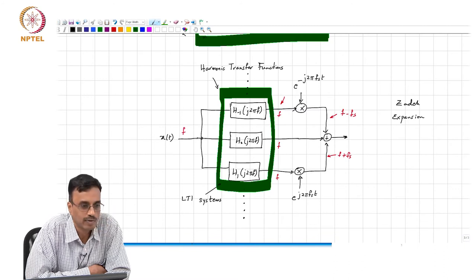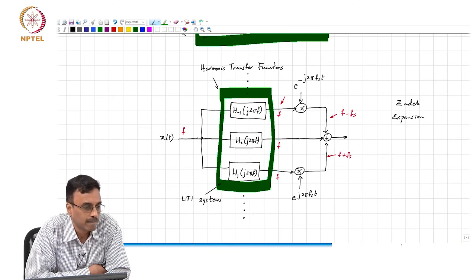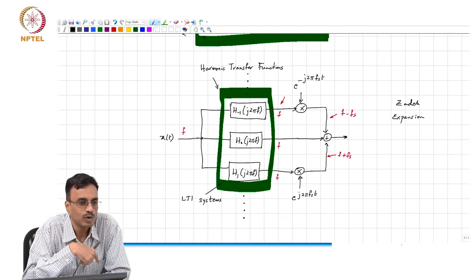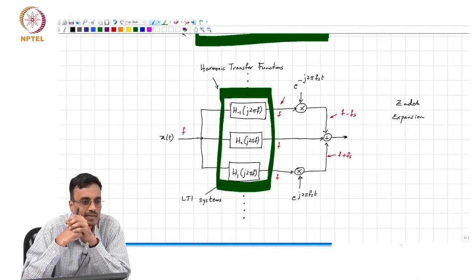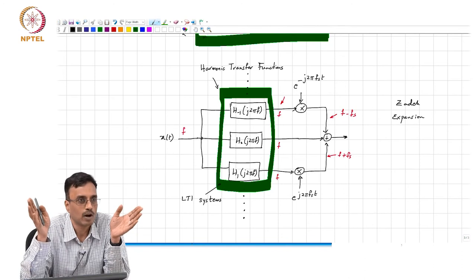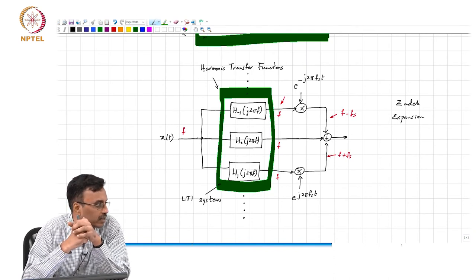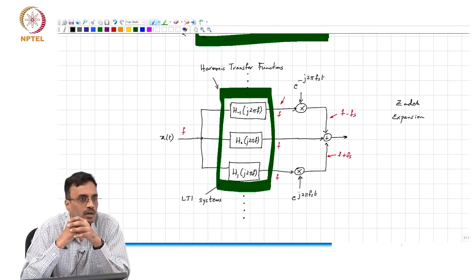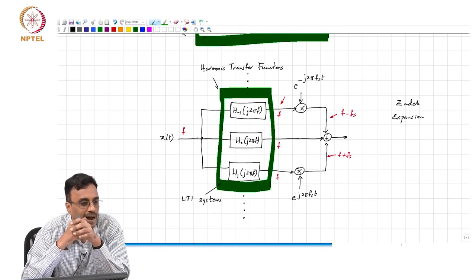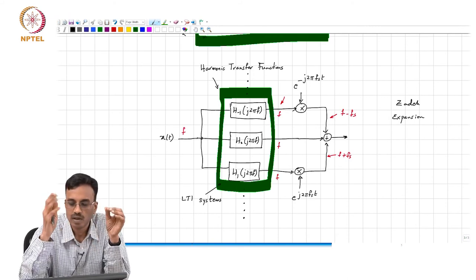At a frequency f, to calculate the harmonic transfer function, you simply excite the system with e to the j 2 pi f t. Look at the output and find the gain by multiplying the output by e to the minus j 2 pi f t. You will get a complex waveform which varies periodically with f_s. You can expand that periodic waveform as a Fourier series, and the coefficients of the Fourier series give you h sub k of j 2 pi f for that frequency. If you want it for a different frequency, you repeat the measurement.